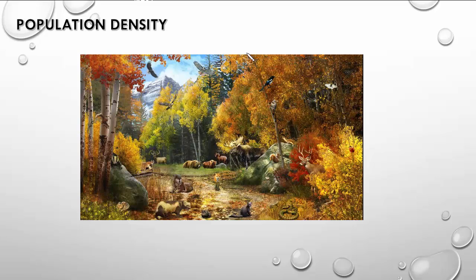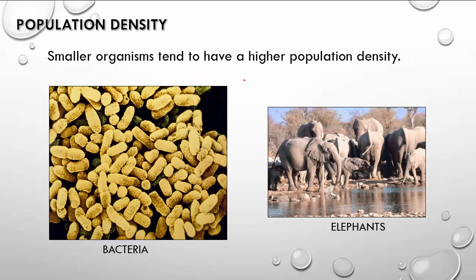Here we have an image that could represent some kind of a forest ecosystem — we've got birds in the sky, land animals, and of course microorganisms in the soil and plants. The concept I want to get across is population density: the number of organisms in a particular area, volume, or space. Smaller organisms tend to have higher population densities because they take up less space and use fewer nutrients. We can see bacteria versus large organisms like elephants — there's a much higher population density in the bacteria than in the elephants.